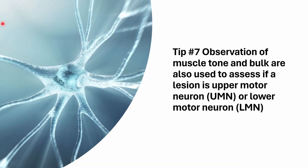In the last tip, I introduced the concept of using upper motor neurone or lower motor neurone weakness to help determine where in the nervous system — specifically the spinal cord or the neuromuscular system — the lesion is located. The other way of doing this is to assess muscle tone and bulk, which is what we're going to go through in this tip.